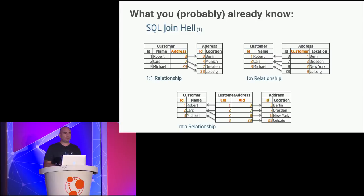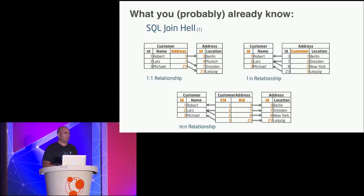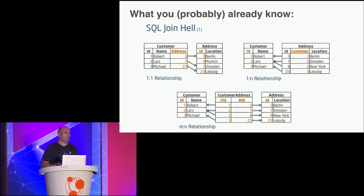If you come from a SQL background, you have tables: a customer table and an address table connected with a foreign key. But a customer can change an address, and at one address you can have multiple customers, so you end up with a join table. It has practically no value except the foreign keys. Most relationships in the real world become many-to-many relationships — eventually you'll get that one special case and you have to go many-to-many.